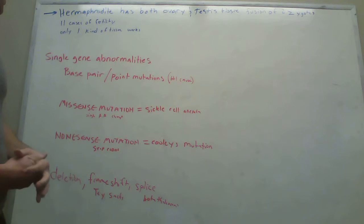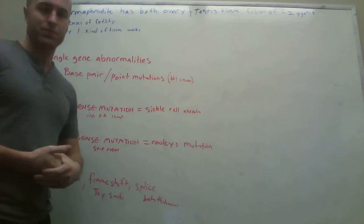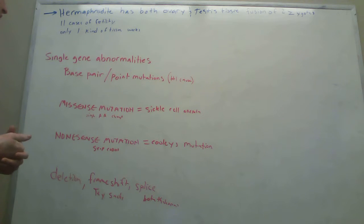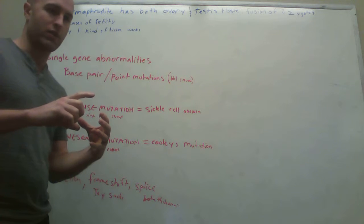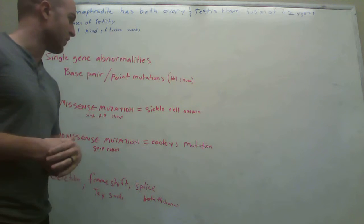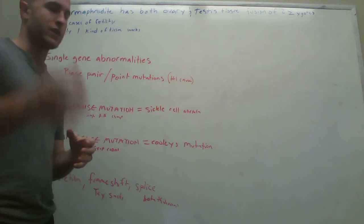Now going on here, there are some single gene abnormalities to discuss. The first one is going to be base pair point mutations. These are the number one cause of single gene abnormalities. Basically there's one of the base pairs like the AT or whatever got swapped out, there's one point that got mutated.